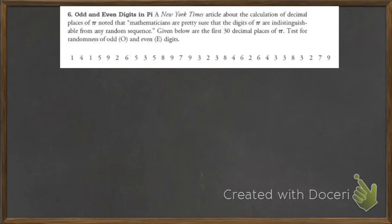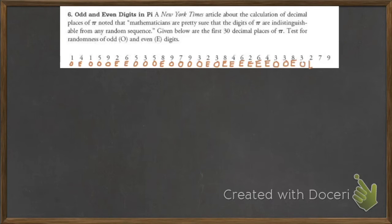We're trying to see if it's random by checking odds and evens. So let's go and list the odds and the evens. Odd, even, odd, odd, odd, even, even, odd, odd, odd, even, odd, odd, odd, even, odd, even, even, even, even, even, even, even, even.